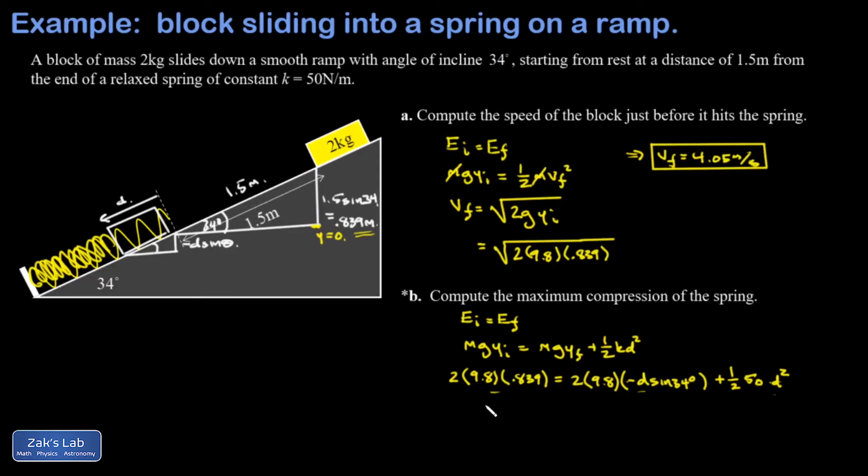So what I'm doing here is reversing the direction of this equation so that it looks more like the setup for the quadratic formula. I have 25 d squared and then my next term is negative and 2 times 9.8 times the sine of 34 turns out to be 10.96, so I end up with a negative 10.96 times d.